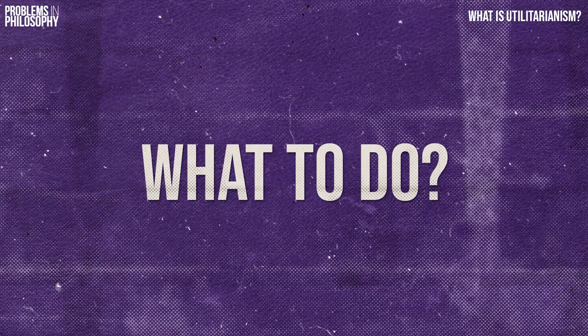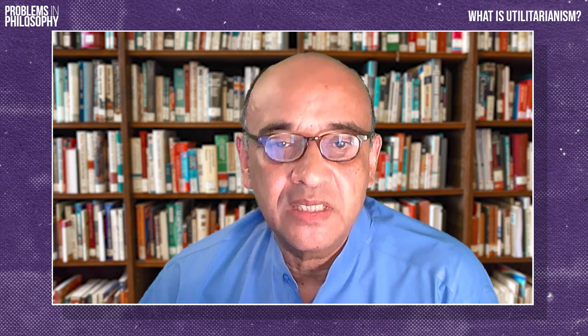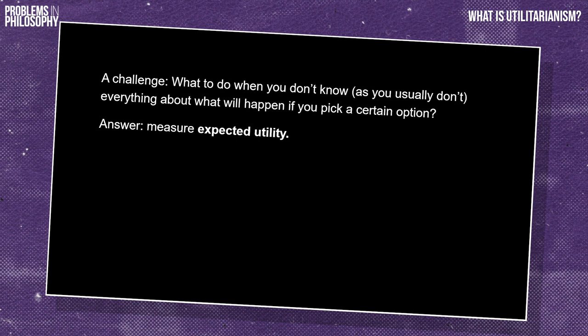If you're considering the consequences of your various options, you won't usually be certain about what will happen when you act. The results of your acts will often depend on things that haven't yet been decided, including what other people will do. And some consequences of your acts are very long term, and we can't predict a lot about the far future. Utilitarians think that while we don't know what all the results of our acts will be, we can always consider how probable various outcomes are. As a result, they think we should be guided by what's called the expected utility of our actions. To calculate the expected utility of an act, consider all the possible outcomes and multiply the utility of each outcome by its probability. Then you add up all those products, and the result is the act's expected utility.